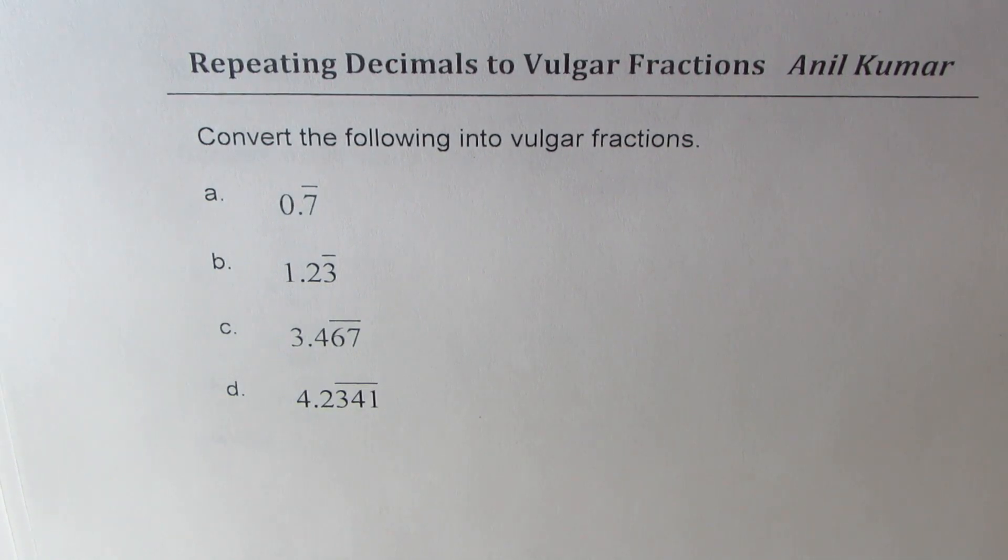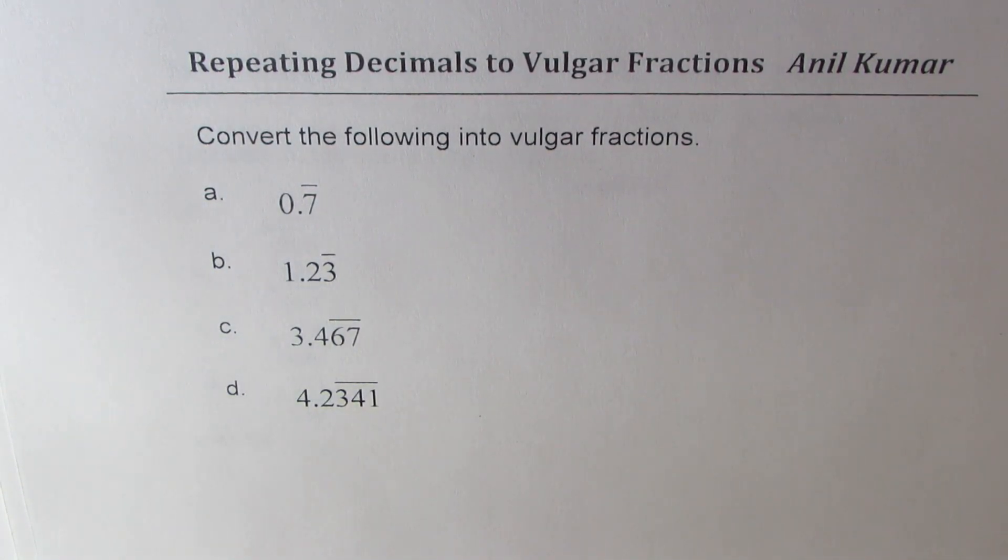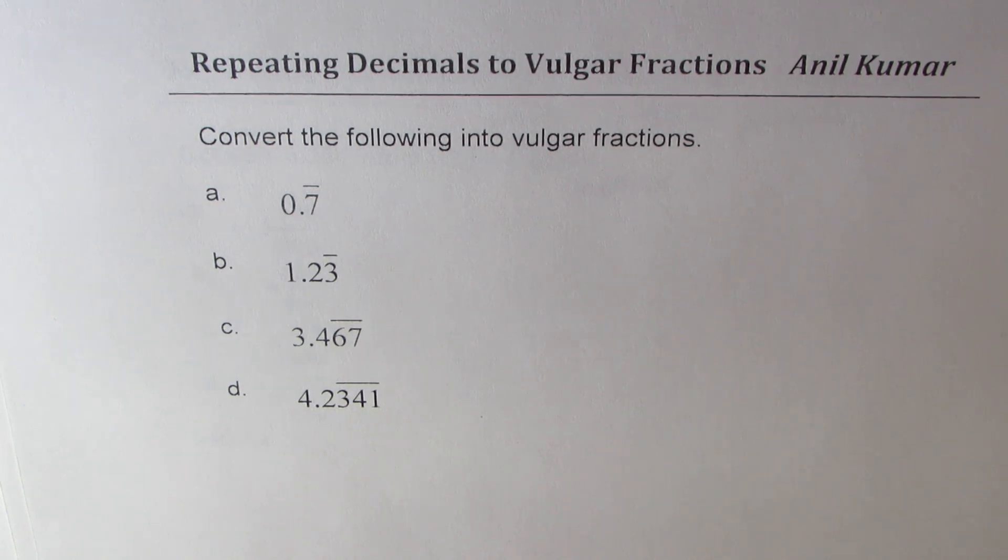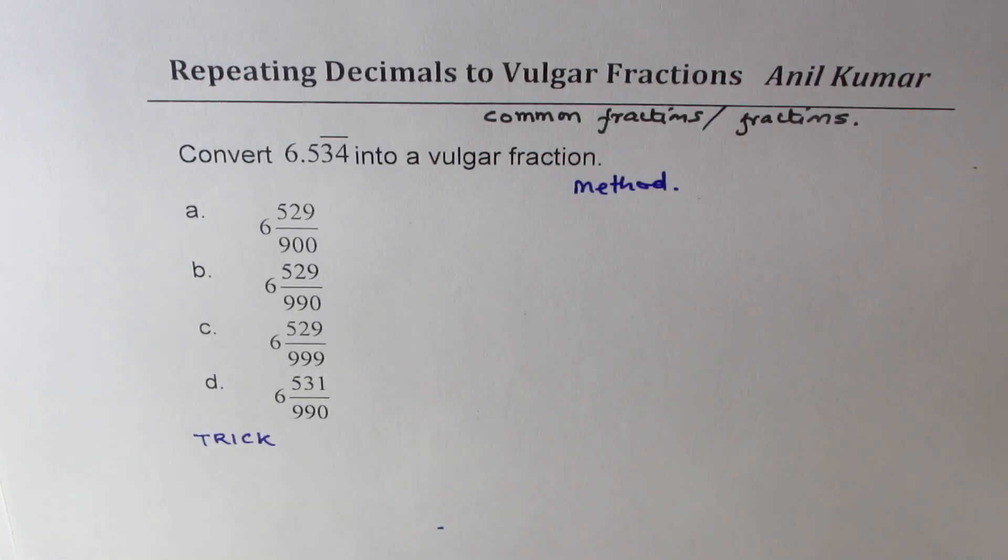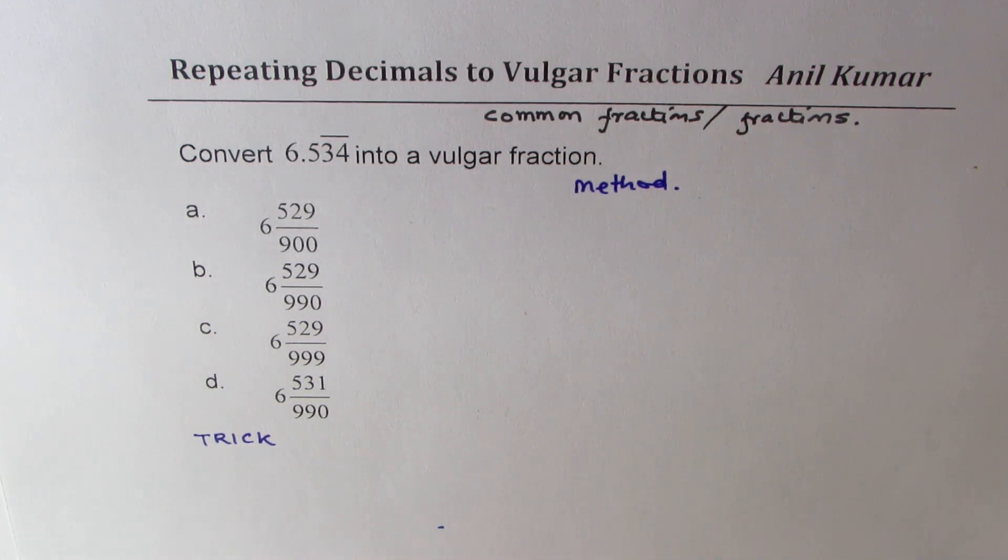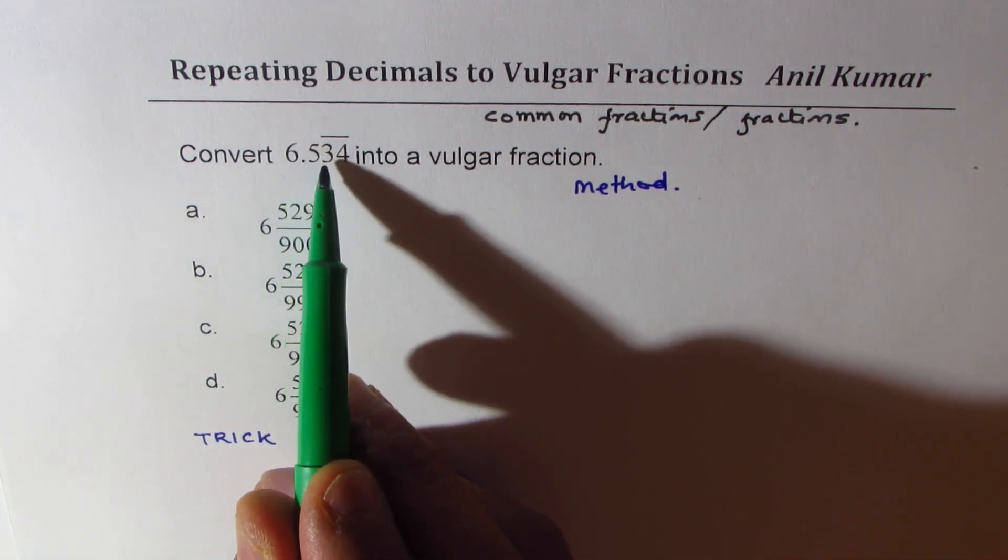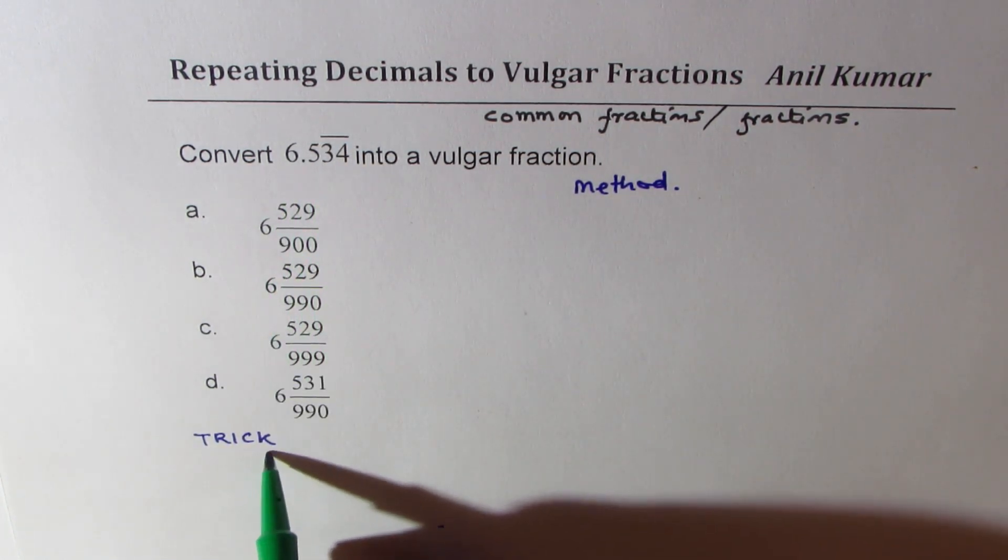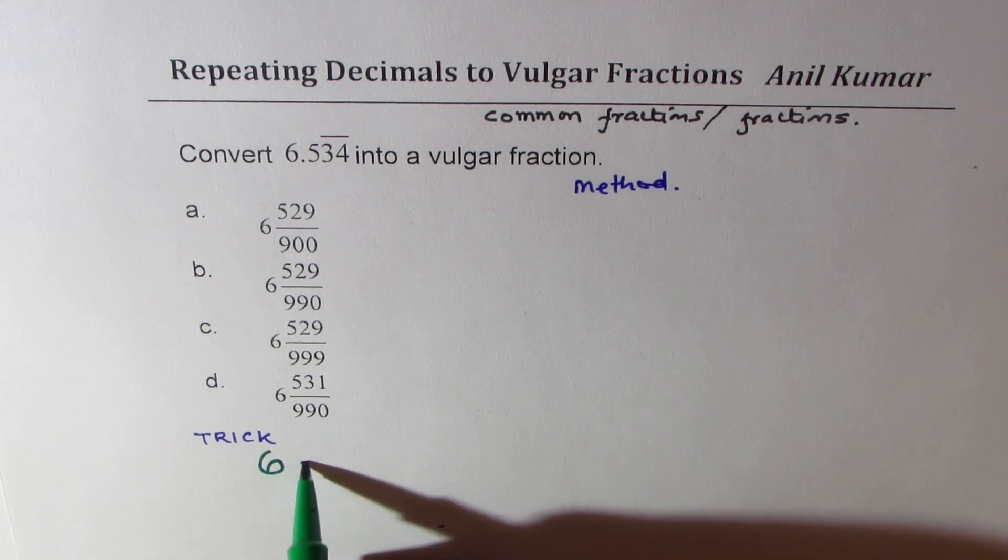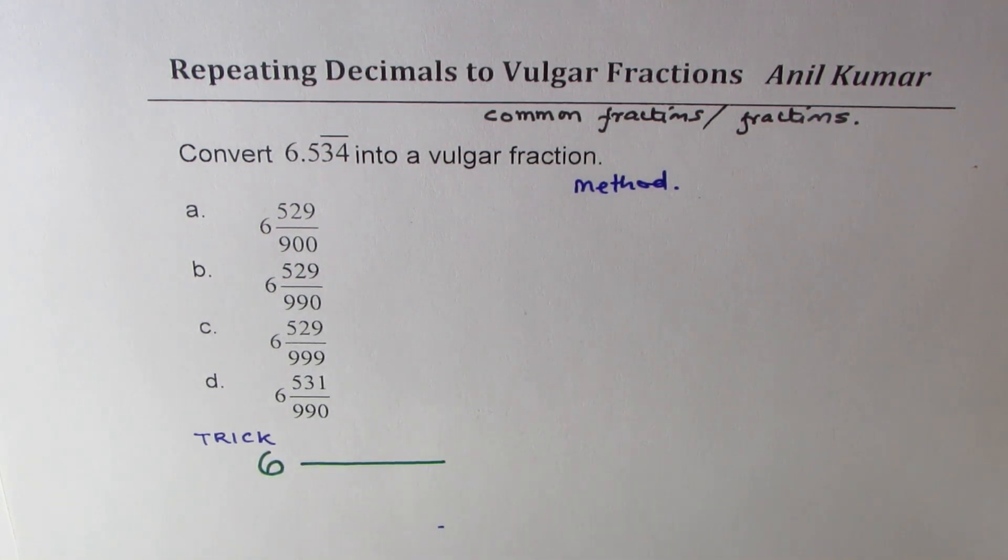We'll take up four other examples to just convert using the trick. You can always verify your solutions with the help of a calculator. So let me just share the trick first to get the answer. 6.534 means we have 6 whole, and now we have to get something in the numerator and something in the denominator to represent 534.